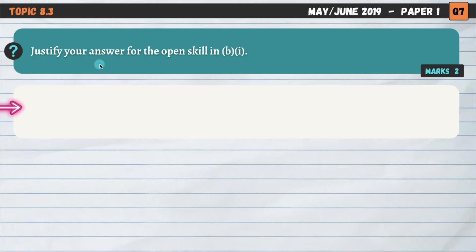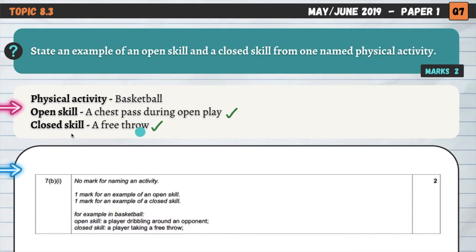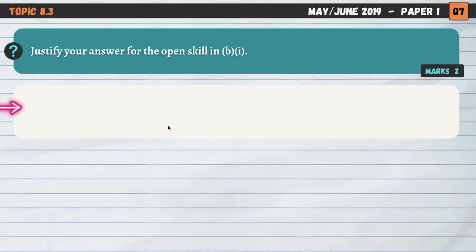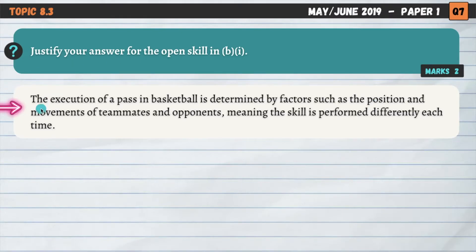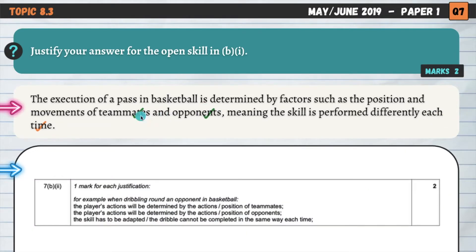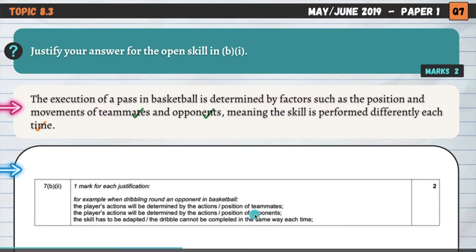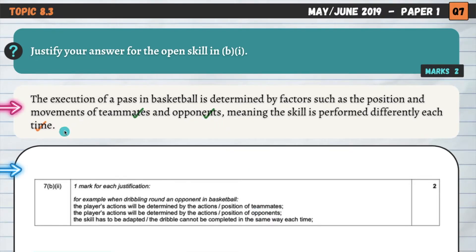The open skill in basketball, which is affected by the environment and constantly changes, could be a chest pass during open play or dribbling around the court. For the open skill, a player dribbling around an opponent does it differently each time depending on the position and movements of the opponent. I would have scored three marks there — one for teammates, one for opponents, and one for noting the skill is performed differently each time.